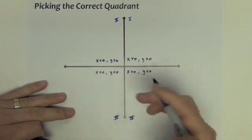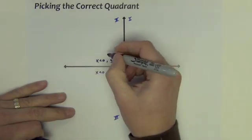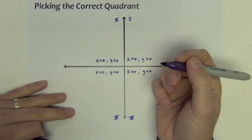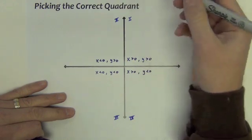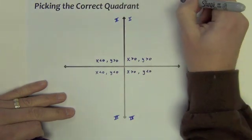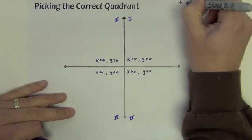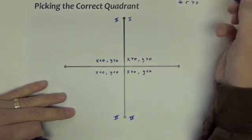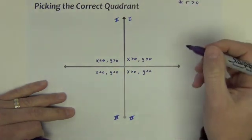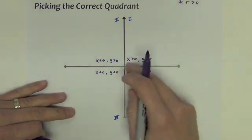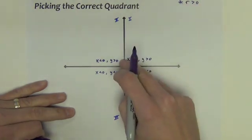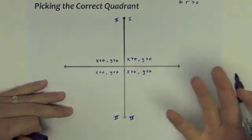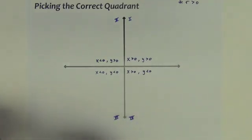In all quadrants, R is greater than zero. It's the distance from the origin, and that distance is always going to be positive.